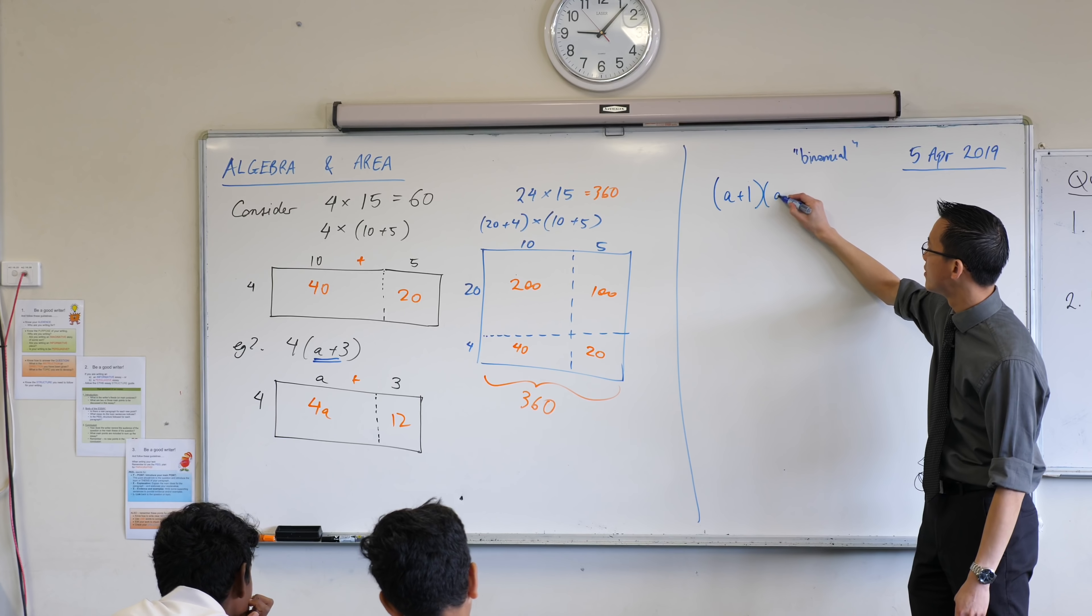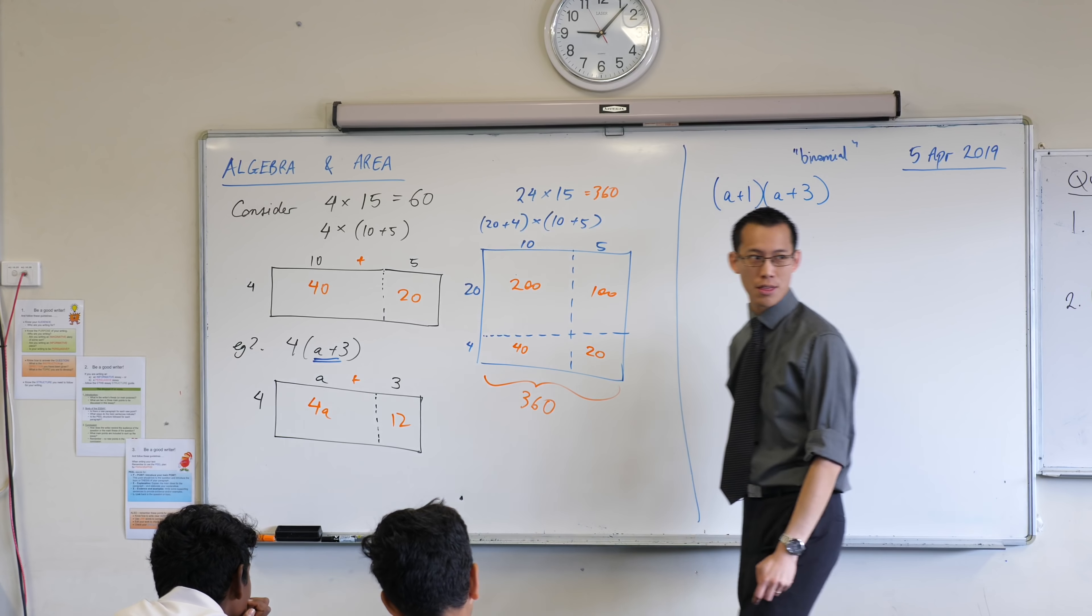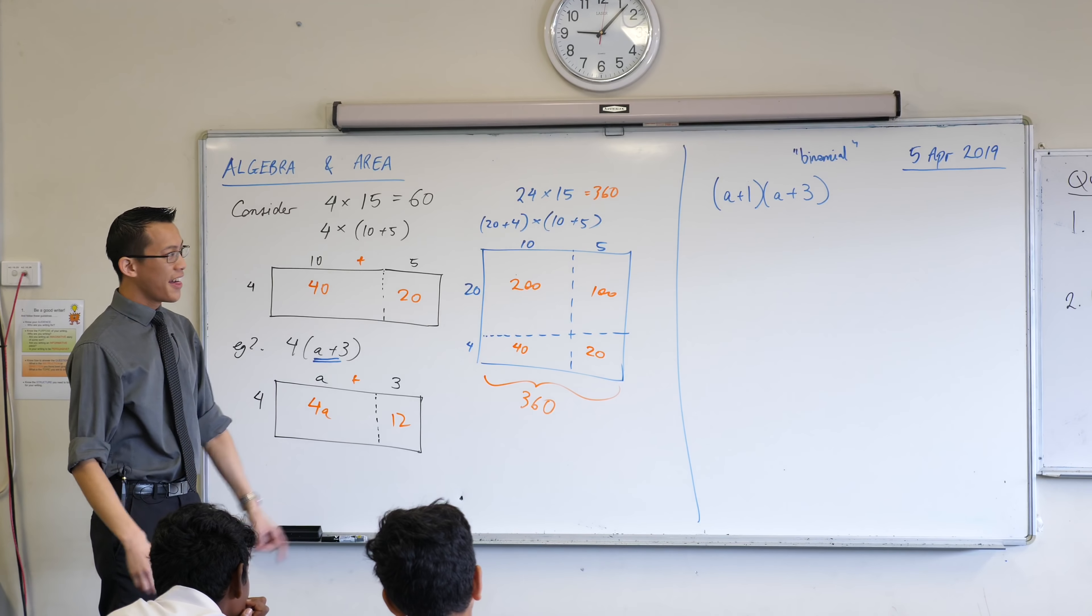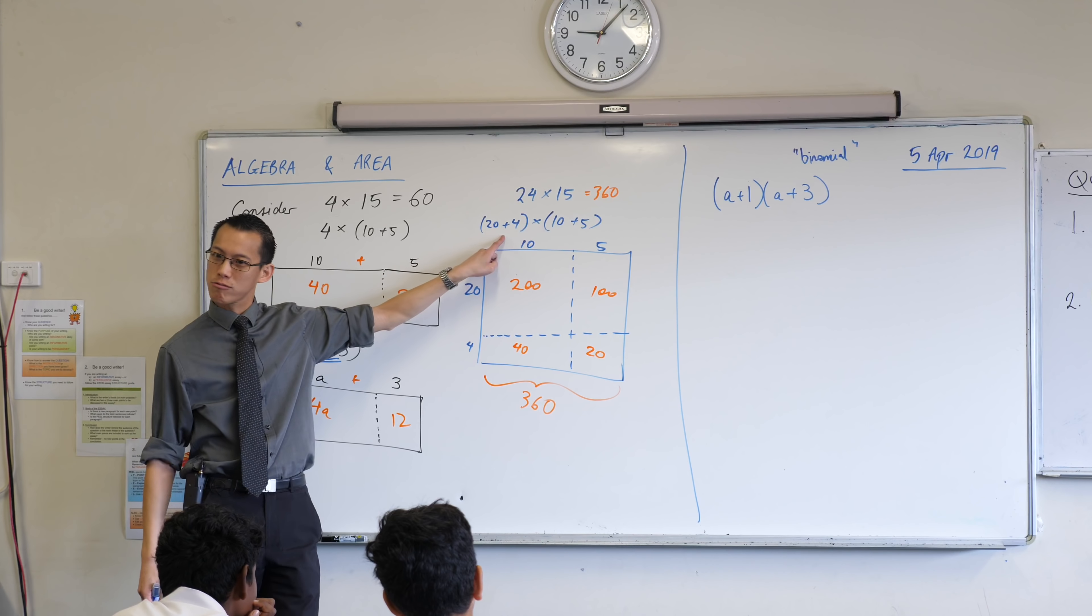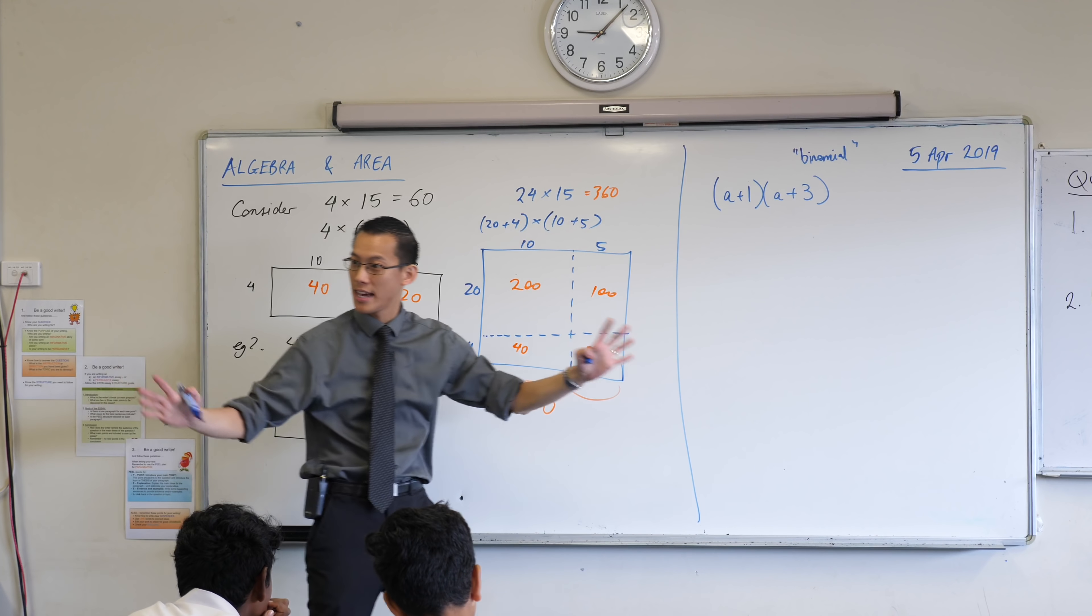So we're going to try this. a plus 1, a plus 3. Now this is new, and this is why we spent so much time developing this to make sure we know what's going on. This is just like what we did here, right? There's a binomial here, two terms, binomial here, two terms, and I'm going to multiply this out. So can you draw a nice big rectangle for me, and we're going to work out all of the pieces?